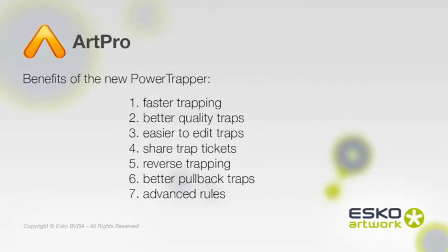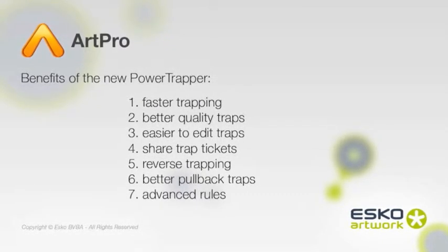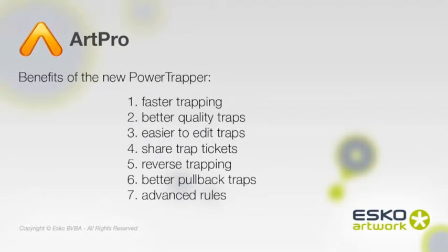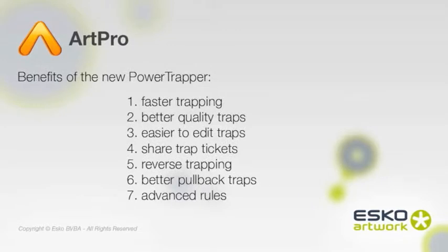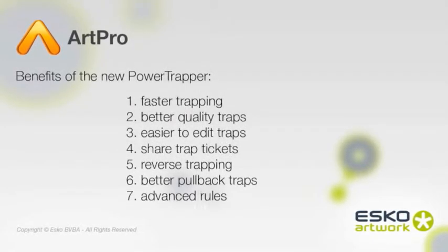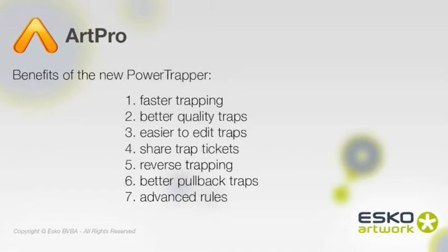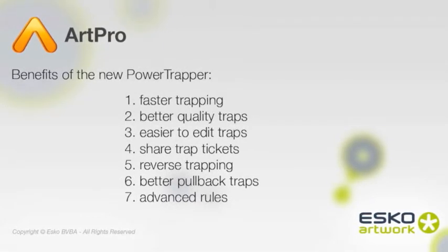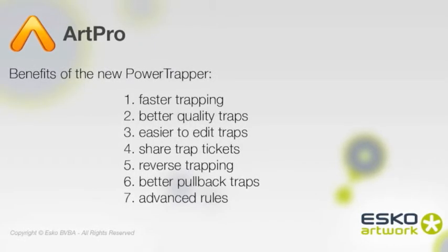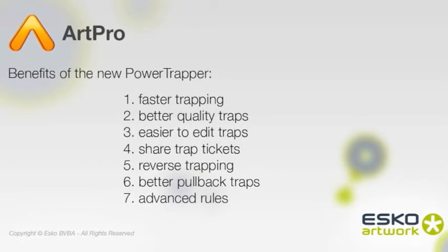Alright, let's recap the benefits of the new Power Trapper. It's much faster and the result is better. It's more intuitive to edit traps afterwards. Tickets can now be shared with colleagues. Reverse trapping has become straightforward as there is a predefined preset for it. You can achieve pullbacks in all combinations of ink. And finally, by using rules you can store all exceptions right in your trap ticket.